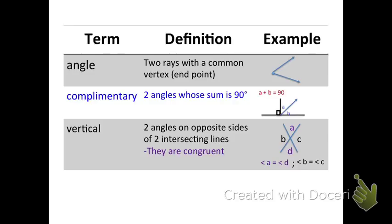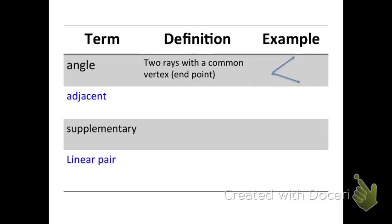For our next definition I'm going to leave angle up there, but we're going to move on to adjacent angles. Adjacent angles are two angles that are next to each other. There is nothing more specific than that. So create a couple of angles that are next to each other, and we'll name them angle X and angle Y. There's nothing more than that, just adjacent angles.